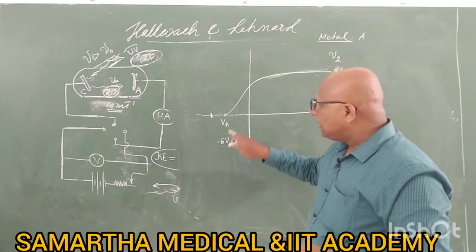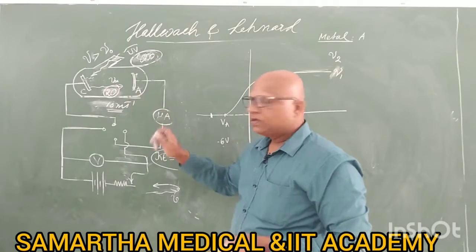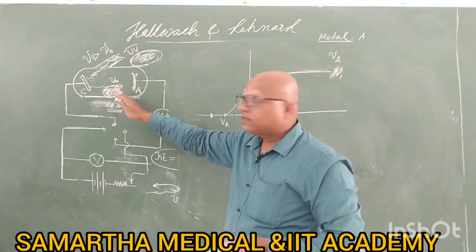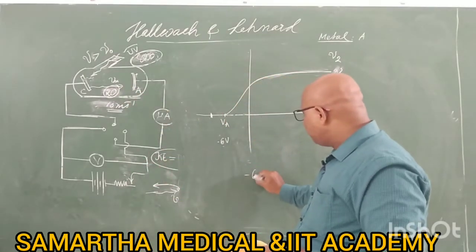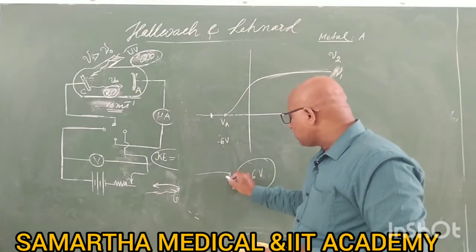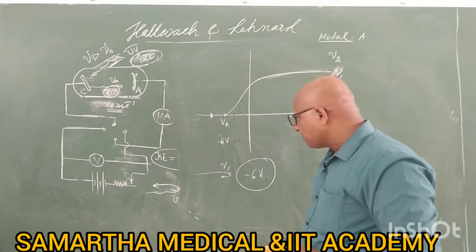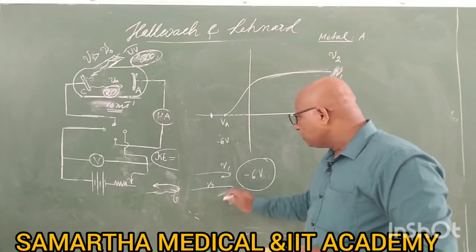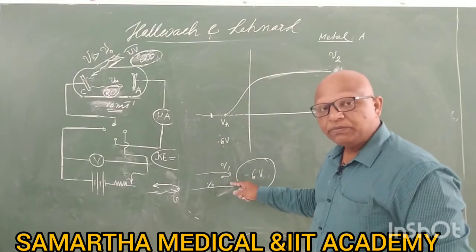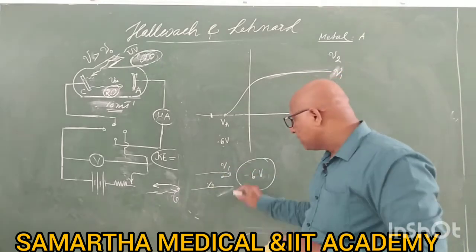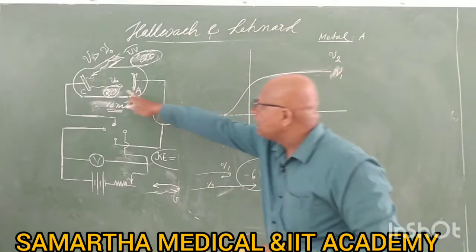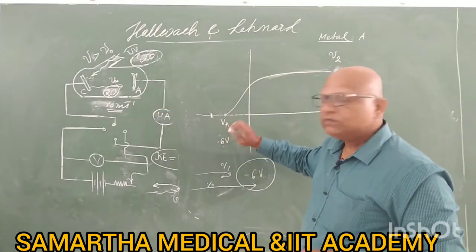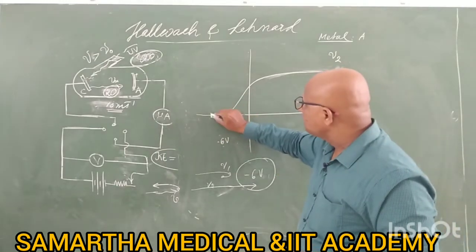For minus 6 volts, less energetic electrons are there and they are stopped. If you are using more frequency, more frequency means high energetic electrons are there. They are even able to cross this minus 6 volt barrier. Nu 1 electrons are stopped. Now the nu 2 electrons are coming — the electrons because of the second frequency are coming. They are stronger enough; their higher velocity is not 10 metres per second, it is more than 10 — it is 15 metres per second. They will be able to cross it, and even though minus 6 volts is there, there will be a current.